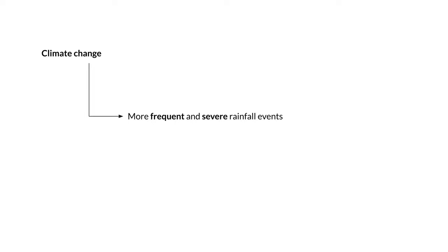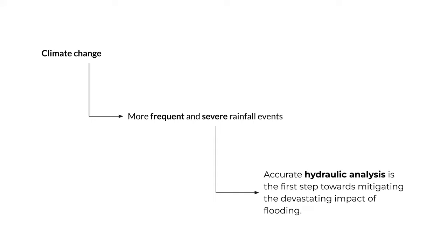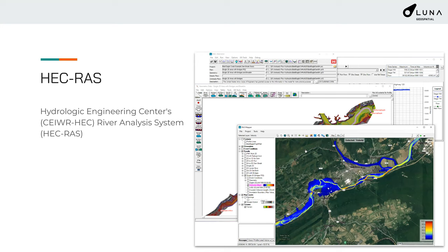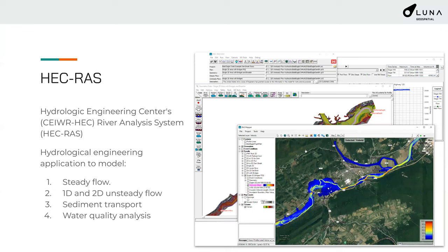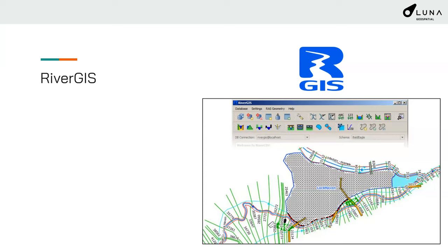The process is fairly simple. Climate change is causing more frequent and severe rainfall events, and accurate hydraulic analysis is really the first step toward mitigating the devastating impact of flooding. The go-to tool for these types of analyses is the Hydrologic Engineering Center's River Analysis System — known as HEC-RAS — a hydrological engineering application to model steady flow, 1D and 2D unsteady flow, sediment transport, and water quality analysis.